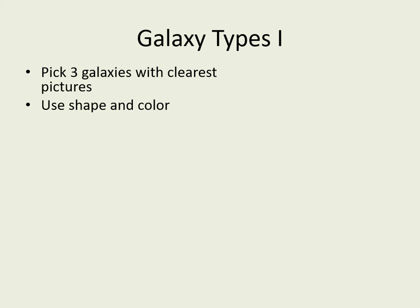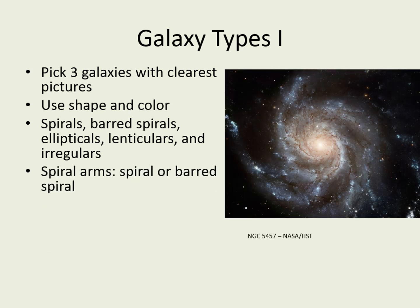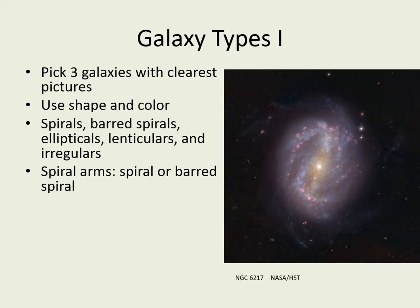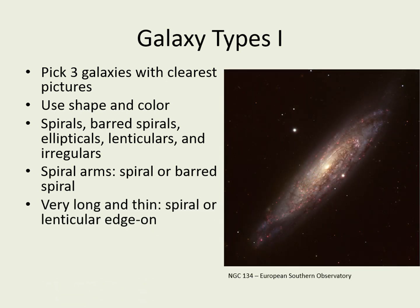The major types of galaxies are spirals, barred spirals, ellipticals, lenticulars, and irregulars. We'll look at how shape and color can help you decide which of these is most likely. Sometimes the shape will make it obvious: if you're seeing clear spiral arms, then the galaxy is certainly a spiral galaxy. If the central bulge looks elongated in one direction, then it's a barred spiral. If the galaxy is very long and thin, then you've probably got an edge-on spiral or a lenticular galaxy.